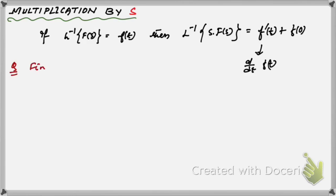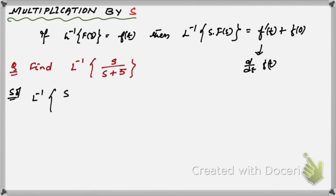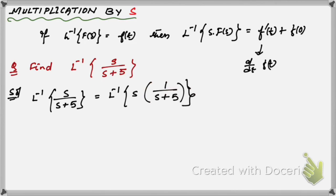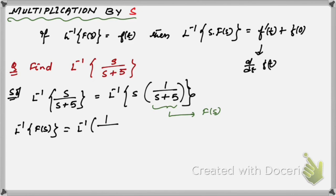Suppose we need to find the inverse Laplace transformation of s/(s+5). How do we solve this kind of problem? We can write it as the inverse Laplace transformation of s into 1/(s+5). Here we take 1/(s+5) as f(s). So in this case our f(s) is 1/(s+5).